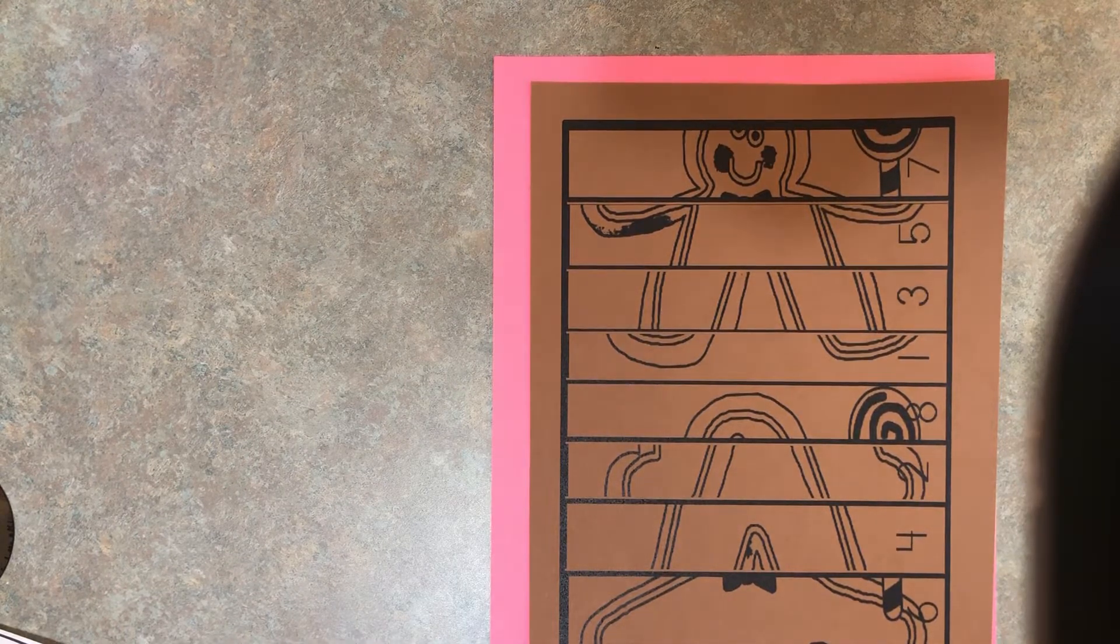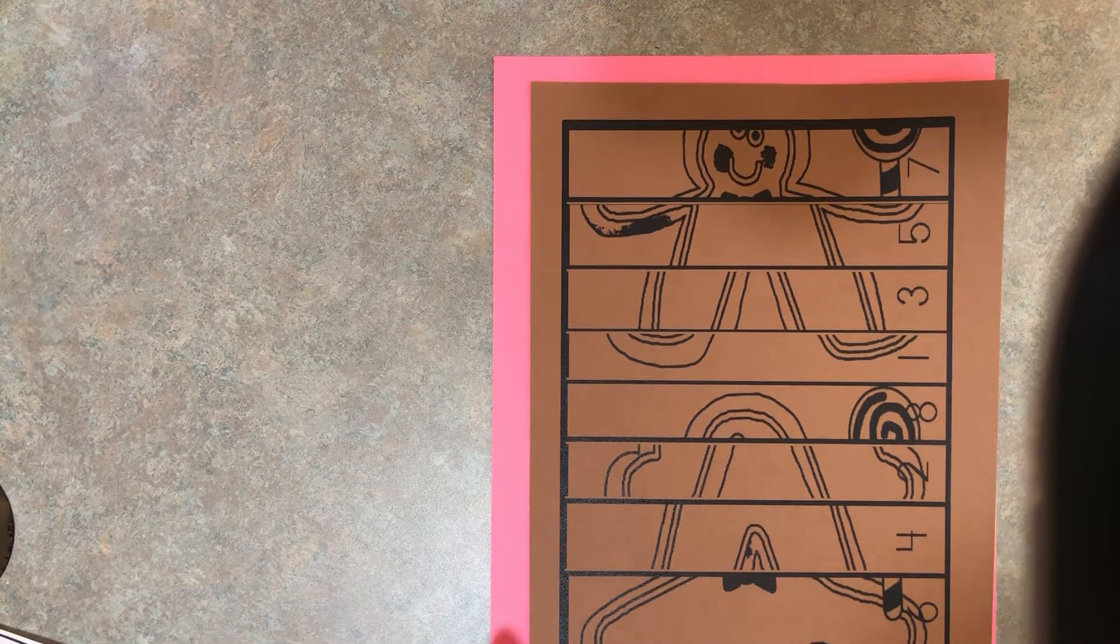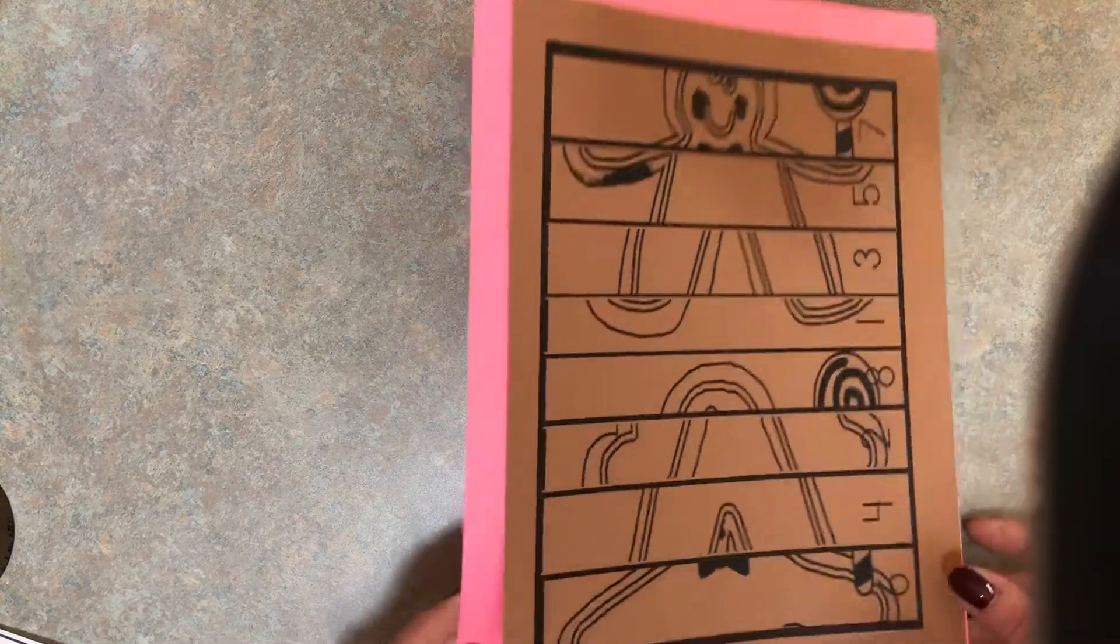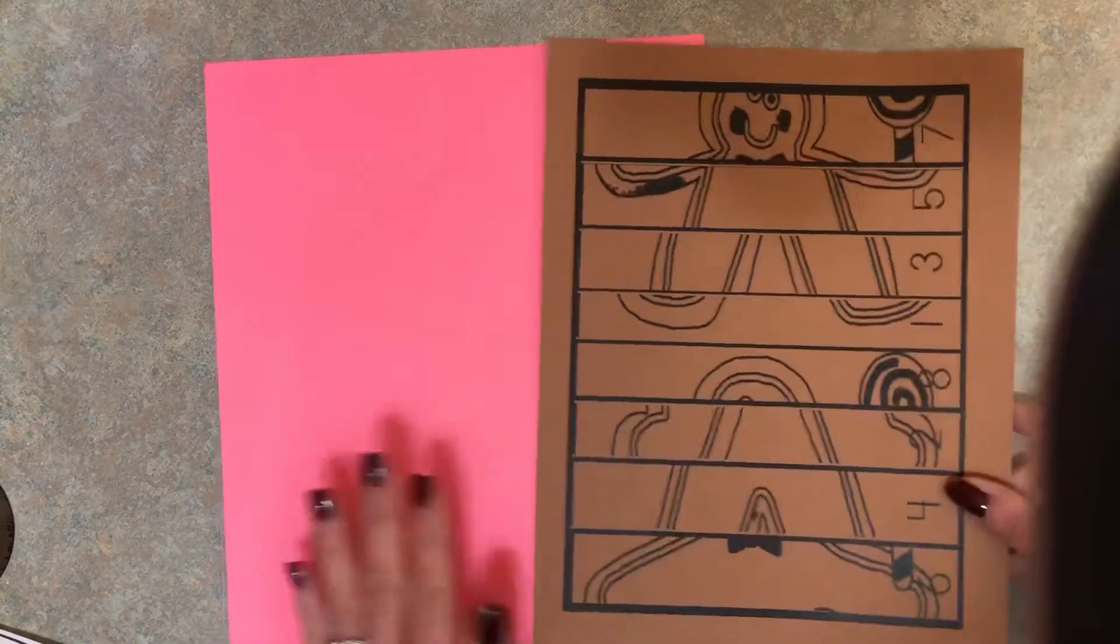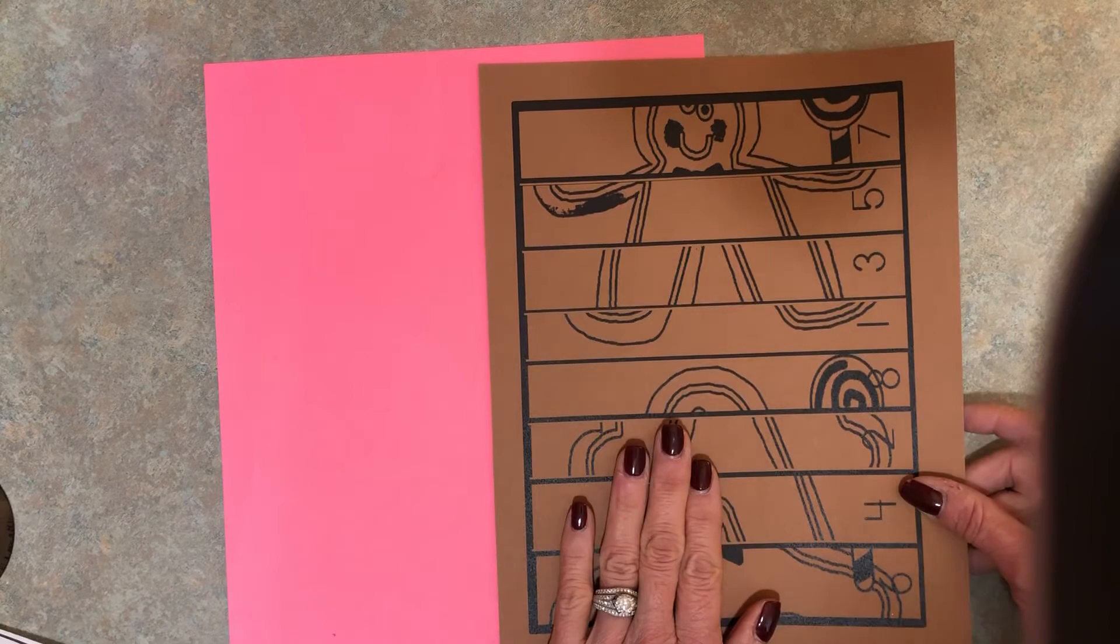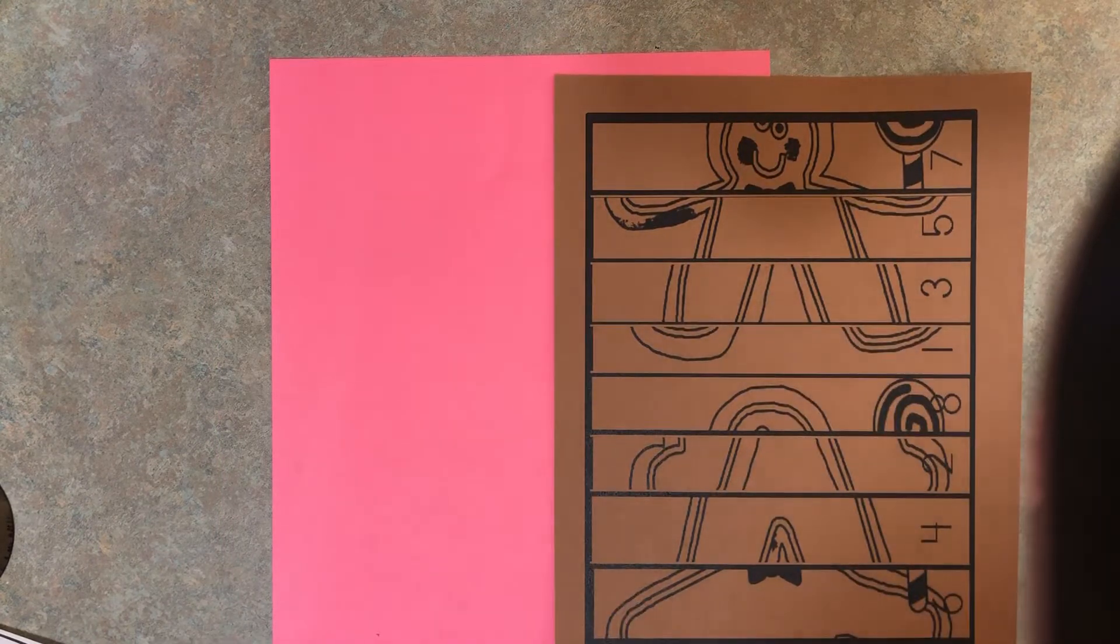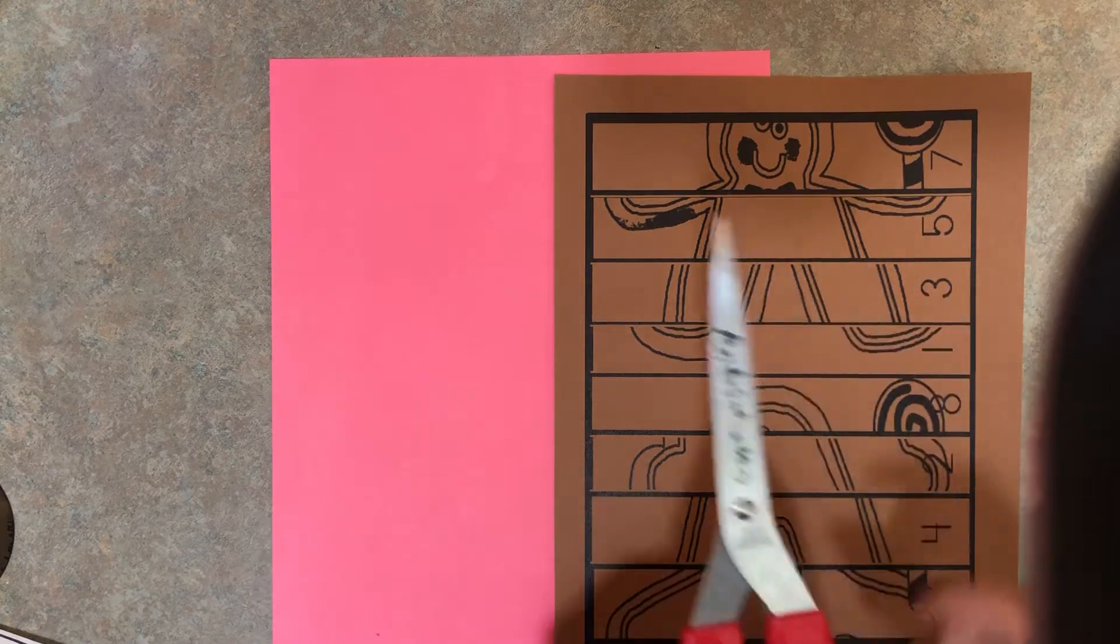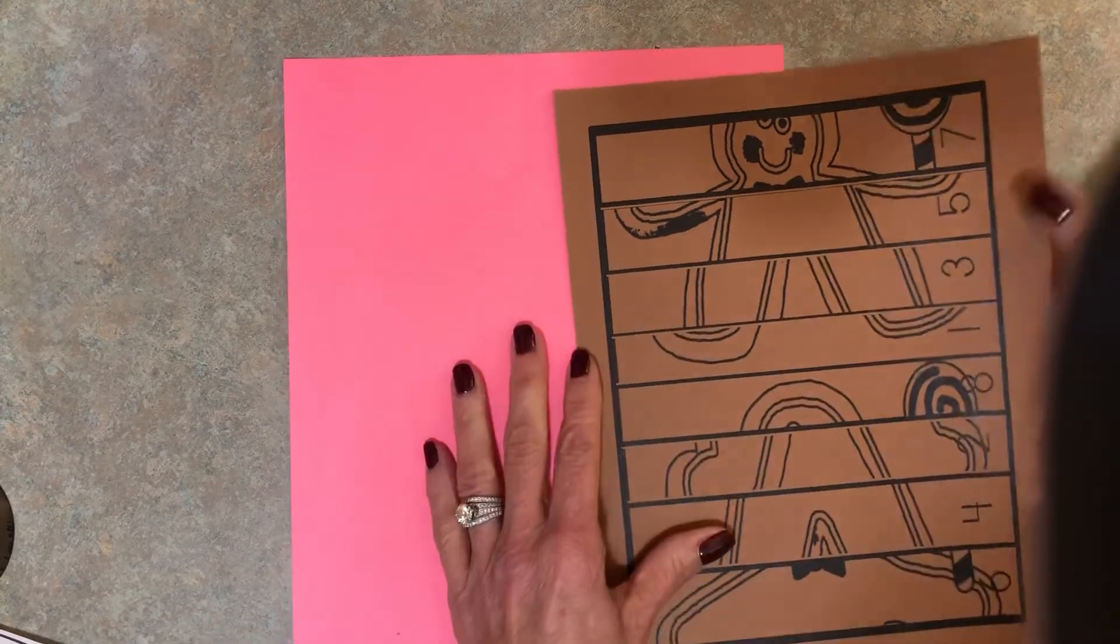Hi TK friends, today you're going to be putting together a gingerbread man puzzle, so you need a couple things. First of all, you need a piece of pink construction paper, your gingerbread man puzzle piece, a glue stick, and some scissors. So the first thing you need to do is